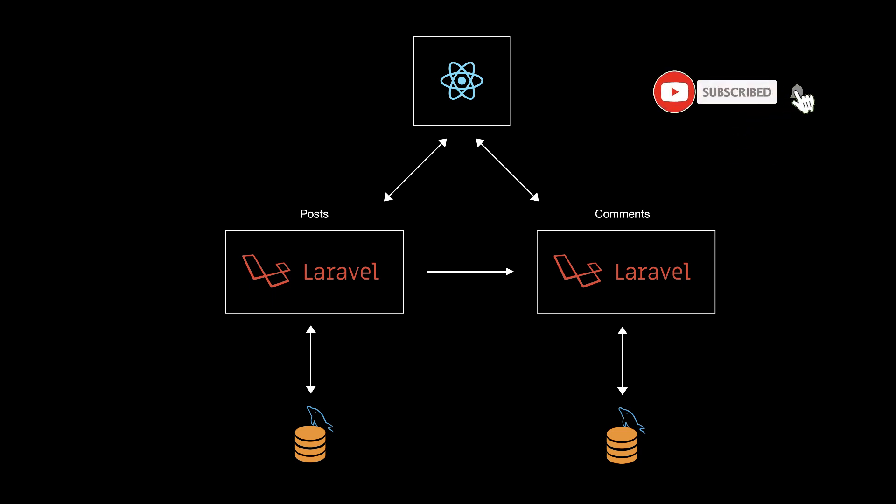In this video, we will continue the Laravel microservices series by switching the HTTP request direction from posts to comments. We will change it so that comments insert into the post microservice, but with a 10% chance of failure, meaning not all comments will be inserted in the post database. In this video we only add the failure functionality, and in the next series we will solve this by synchronizing the database using a cron job.